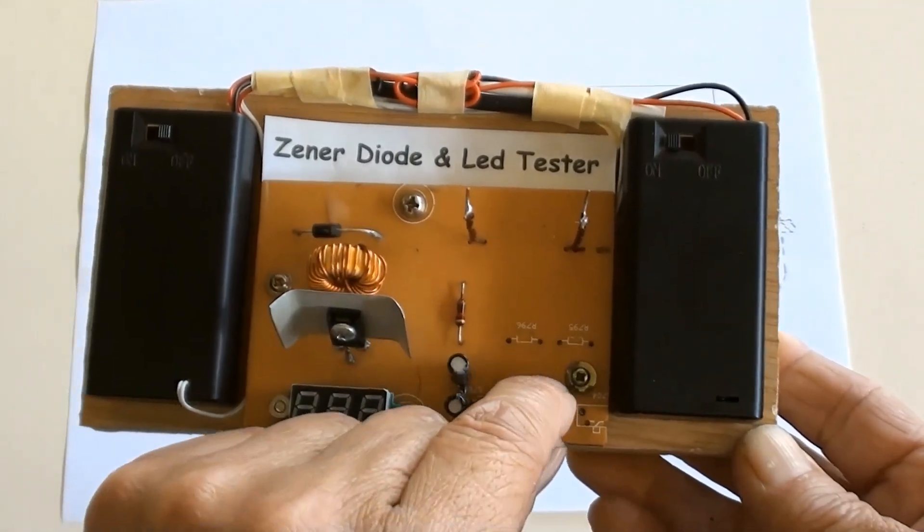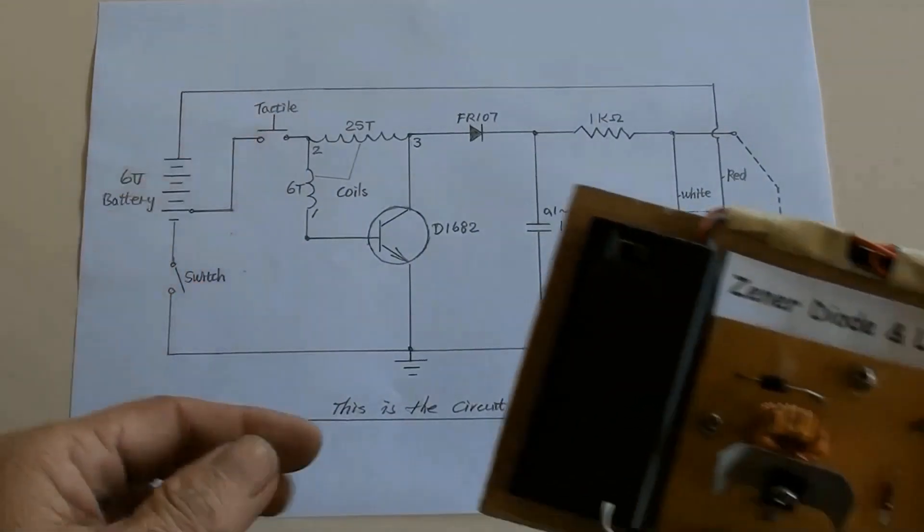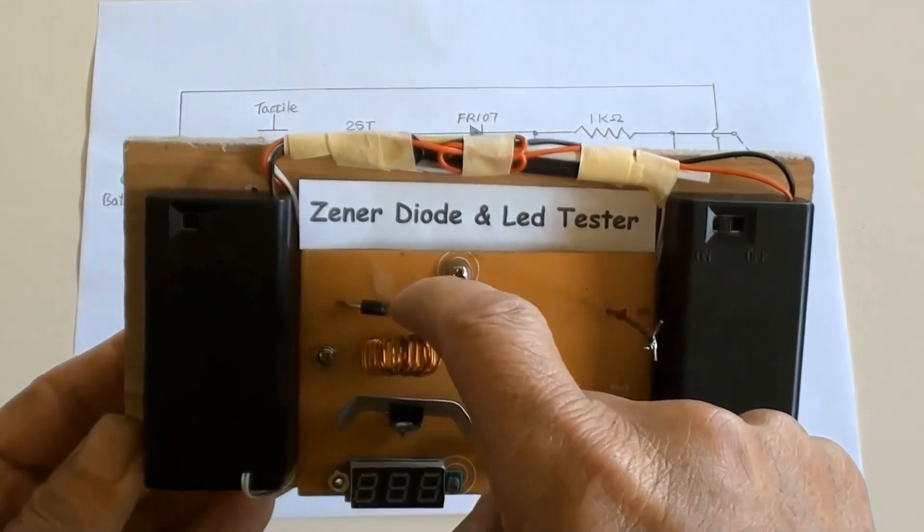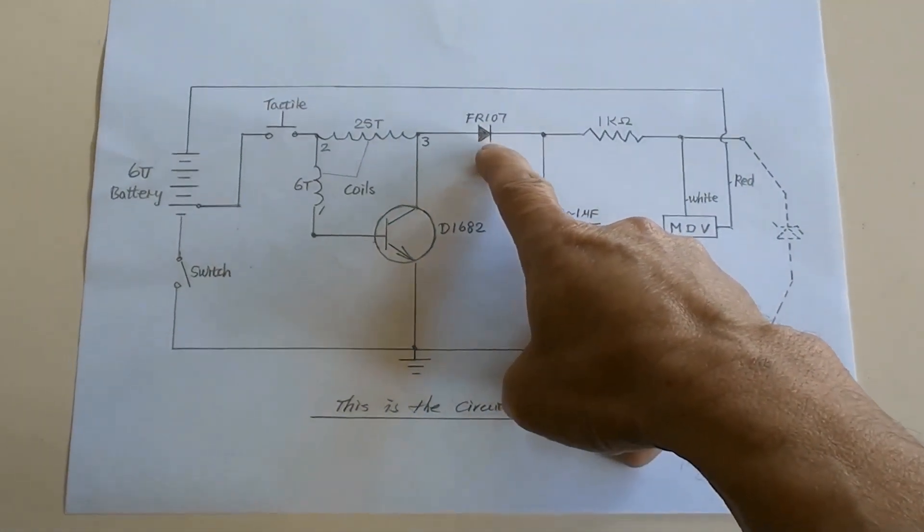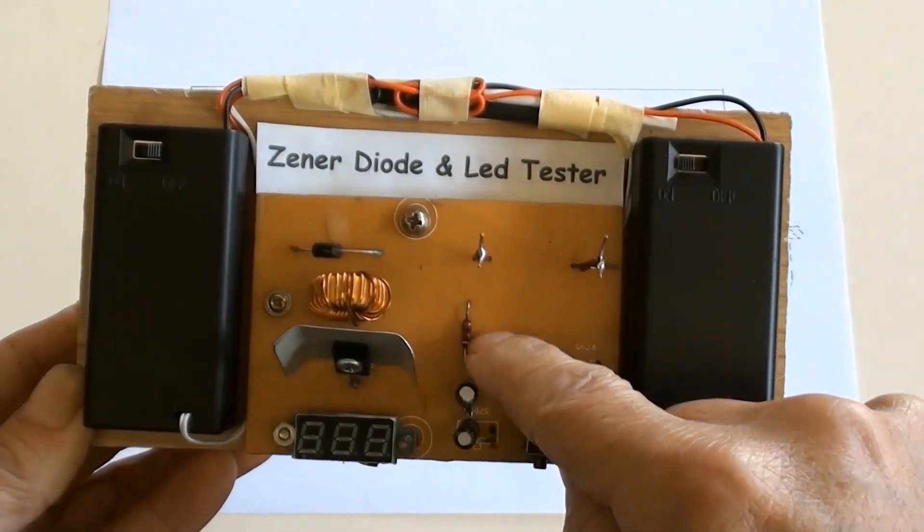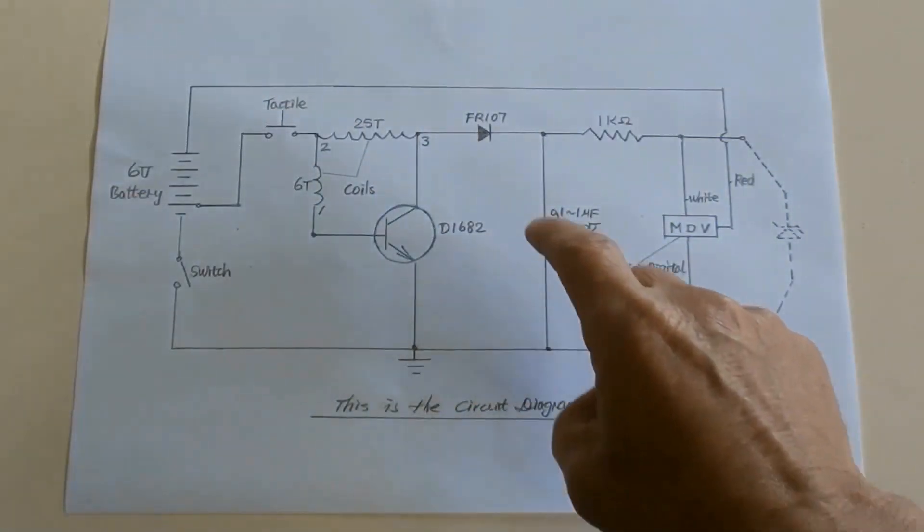That is the tactile switch, shown here in the diagram. This is a fast recovery diode, shown there in the diagram.